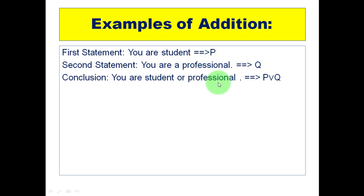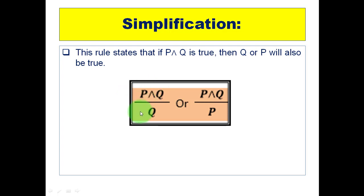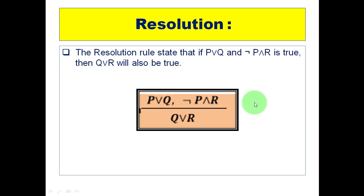Simplification states that if P conjunction Q is true, then Q or P will also be true. If P conjunction Q is true, then both P and Q must be true. So we can derive Q and P individually from P conjunction Q. Written as: P conjunction Q divided by Q, or P conjunction Q divided by P.